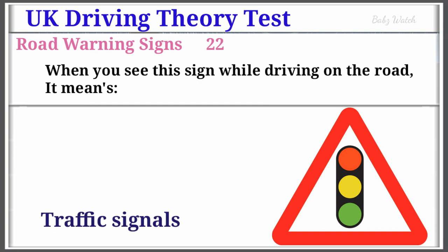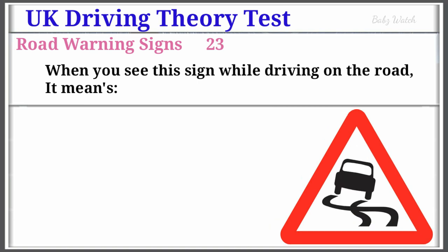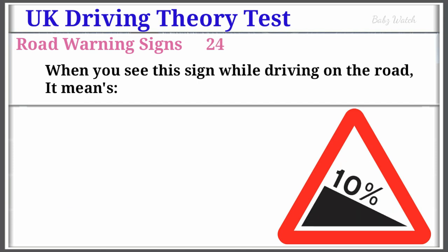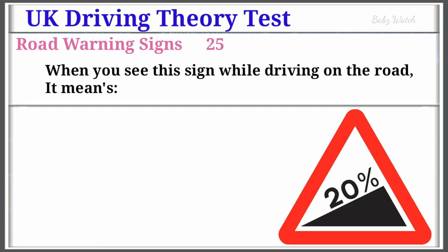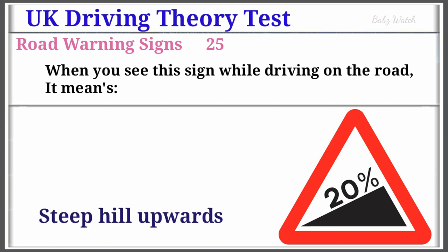UK Driving Theory Test Road Warning Sign Number 23: When you see this sign while driving on the road, it means Slippery Road. Warning Sign Number 24: When you see this sign while driving on the road, it means Steep Hill Downwards. Warning Sign Number 25: When you see this sign while driving on the road, it means Steep Hill Upwards. Gradients may be shown as a ratio, i.e. 20% equals 1 to 5.